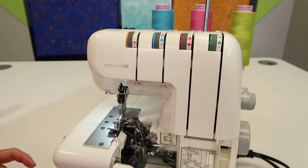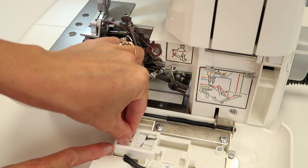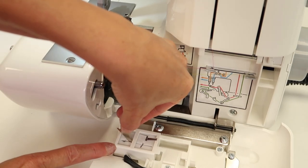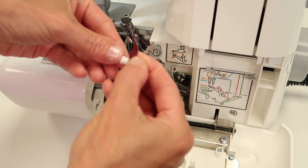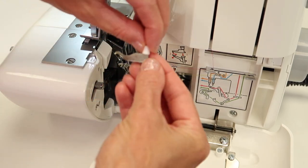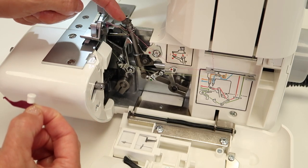Next, as you open up the front door, you will find the two-thread converter is stored right here in the front of the machine. As you slide this out, it's nicely protected in there. You're going to see that it's just this knob and this little finger, and it will attach right where this opening is.